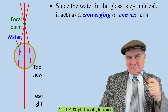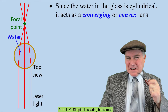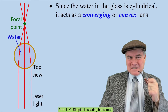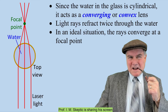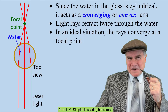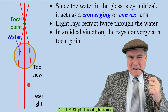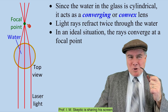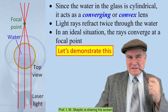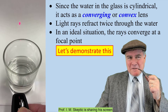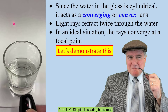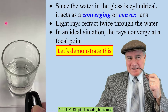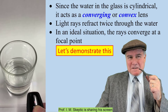I'll share my screen. Since the water in the glass is cylindrical, it acts like a converging or convex lens. Light rays refract twice through the water. In an ideal situation, ignoring the glass, parallel light rays converge at a focal point. See how the point from the laser beam moves to the right when I move it to the left, and vice versa. That's because it's going through the focal point.